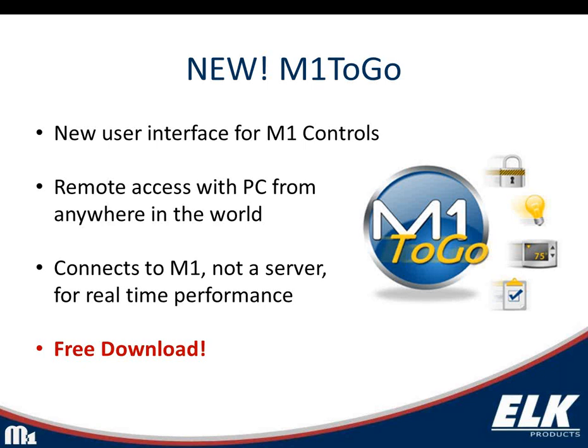The M1 To Go simplifies the previous Java app on the M1 XEP that required several ports - port forwarding could be a nightmare, and a port you used might be used by other devices. It offers features that the Java page didn't have, like viewing and saving the event log, custom settings, and it uses an encrypted port so it's very secure. You can also load it onto a USB flash drive and take it with you - it'll run right off the drive without being installed on the PC. And it's a free download.